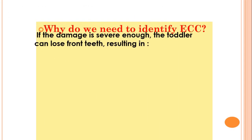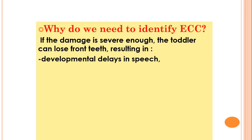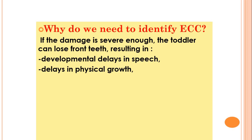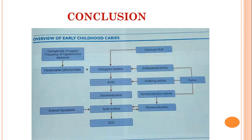Why do we need to identify early childhood caries? Because if the damage is severe enough, the toddler can lose the front teeth that should have been lost at age six or seven — they will be lost early. This may cause sequelae such as developmental delays in speech, delays in physical growth because the child cannot eat properly, and psychological trauma to the child, as outlined by the AAPD.